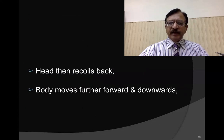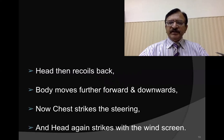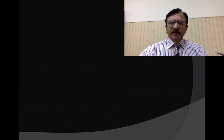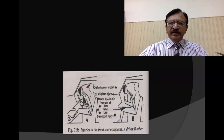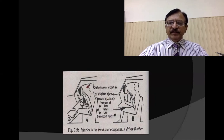Then the head recoils back while the body moves forward and downward; the chest strikes the steering, and the head again strikes the windscreen. As you can see on the left side, the chest is striking the steering column and the head is striking the dashboard, with stress forces being transmitted from the legs and arms. For the passenger, he is rotating forward — head striking the windscreen or dashboard, and knees striking the lower margin of the dashboard.